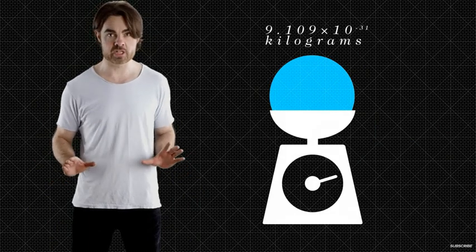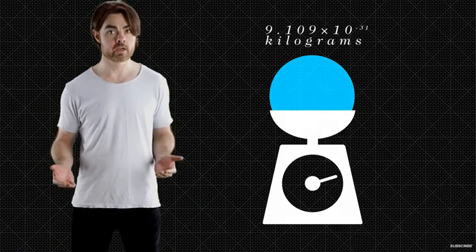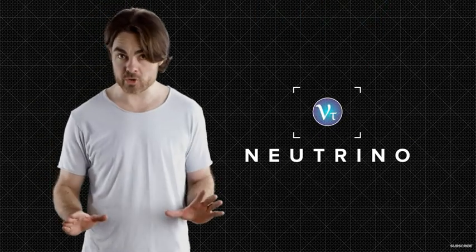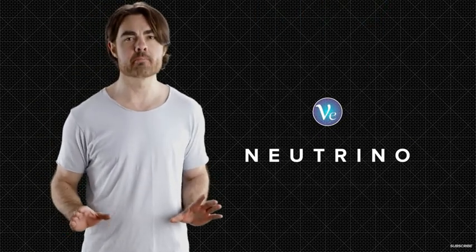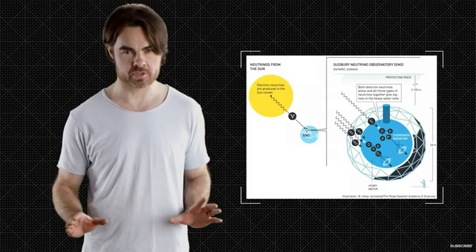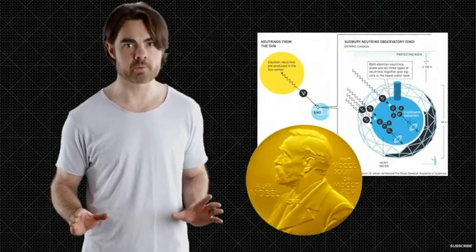But a different sort of changeability is the only way that we know that the tiny neutrino has mass. And it was the measurement of those neutrino oscillations that won the 2015 Nobel Prize in Physics.